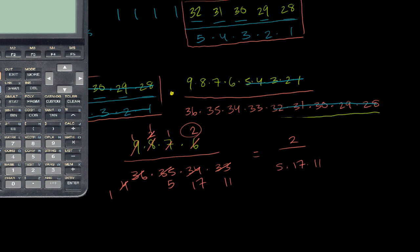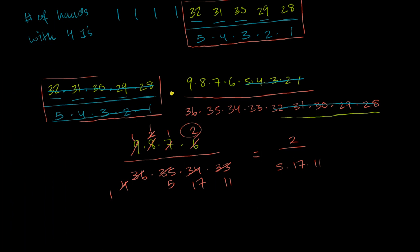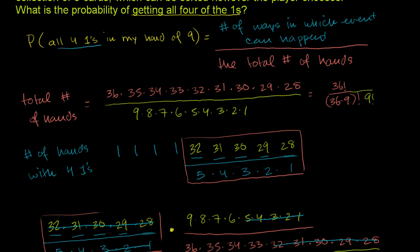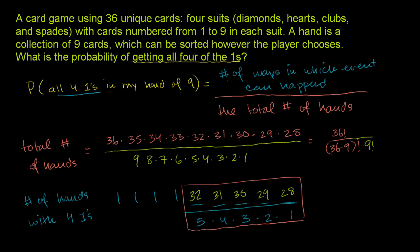And that is — drum roll — this was kind of an involved problem. 5 times 17 times 11 is equal to 935. So it's equal to 2 over 935. So about roughly 2 in 1,000 chance, or 1 in 500 roughly — this is the exact odds — you have roughly a 1 in 500 chance of getting all four of the ones in your hand of nine when you're selecting from 36 unique cards.